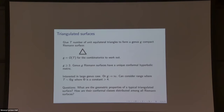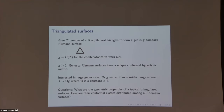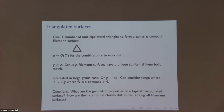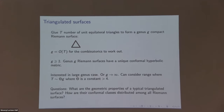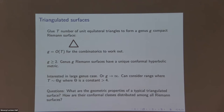We consider unit equilateral triangles and glue them to form a compact surface — everything is oriented and connected. We automatically get a complex structure on the surface, because you can view each equilateral triangle as embedded in the complex plane, and the gluing preserves the structure over the edges, then extends to the vertices of the triangulation, which are a discrete set of points. In this way we get a Riemann surface.